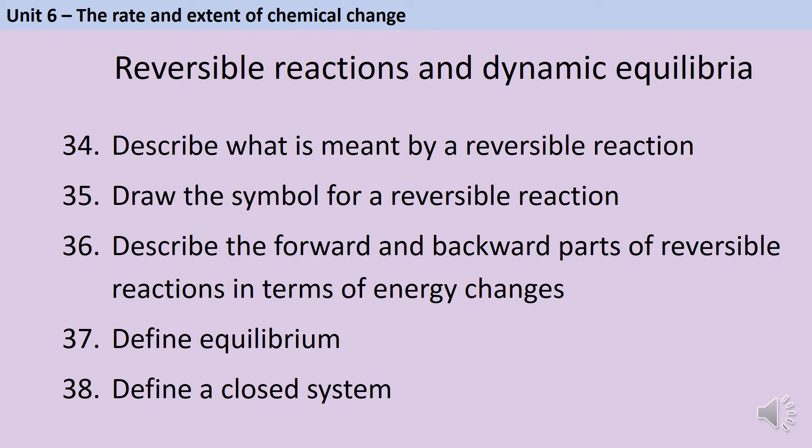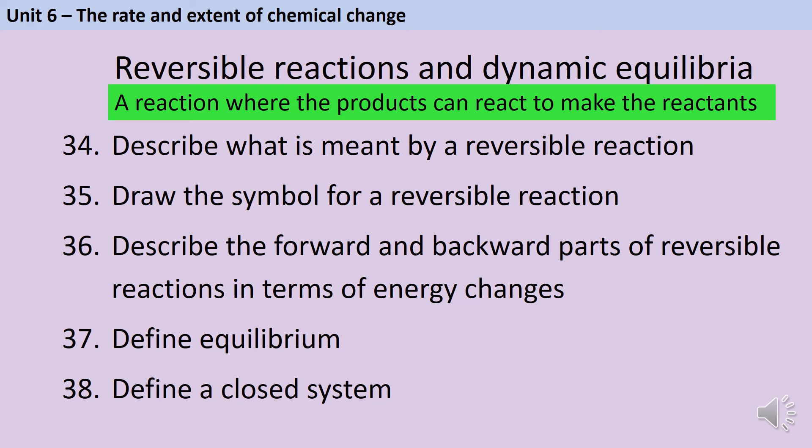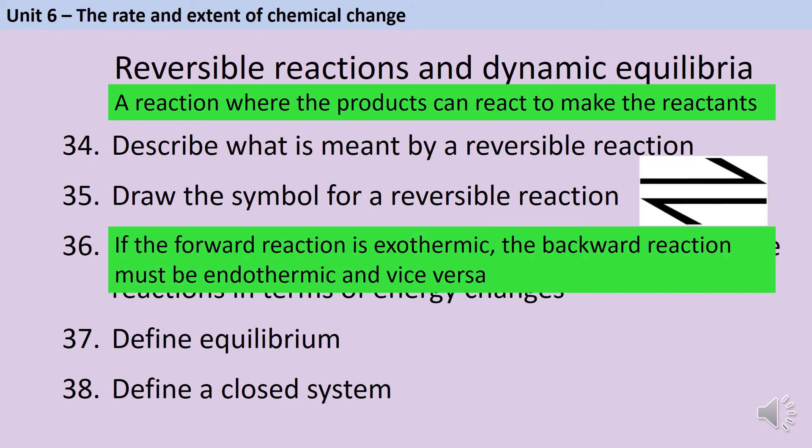A reversible reaction is a reaction in which the products can react together to form back into the reactants, shown using this double-headed arrow. If the forward reaction is exothermic, then the backward reaction must be endothermic. If the forward reaction is endothermic, then the backward reaction must be exothermic. This is because breaking bonds takes in energy and making bonds releases energy. In a reversible reaction we've got the same bonds being made and broken, it's just that the ones broken in the forward reaction are made in the reverse reaction and vice versa.